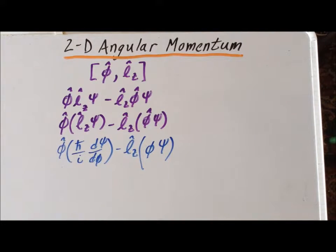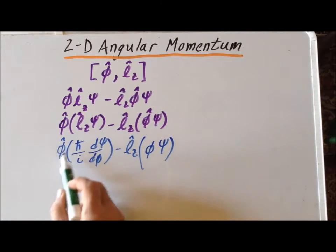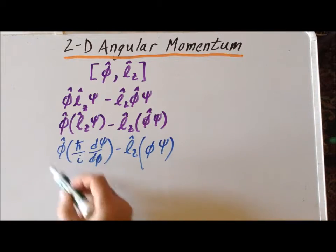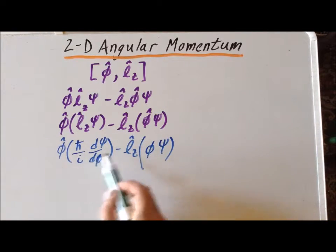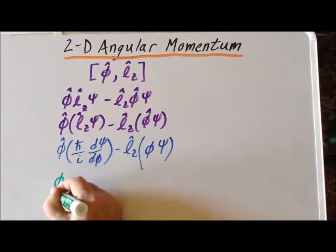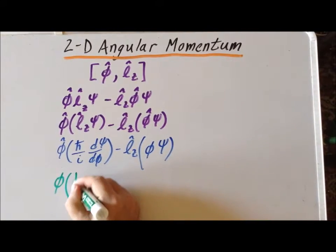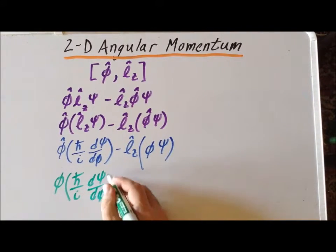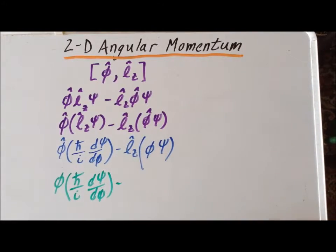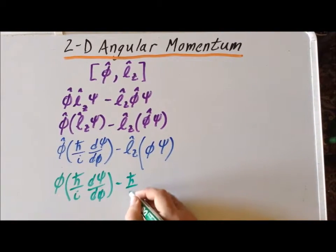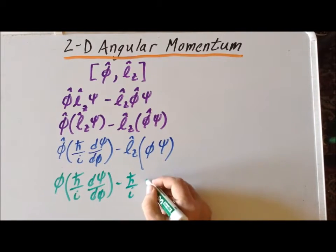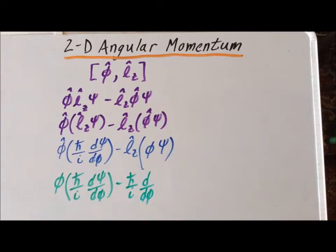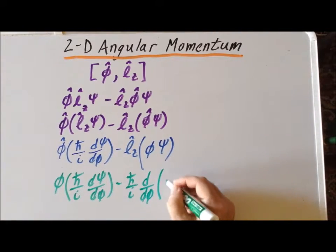Next, we have to operate with the second operator. For the angle phi, we simply multiply by the angle phi, giving us phi times h-bar over i times d-psi-d-phi. Then we replace the angular momentum operator by its actual form, which is h-bar over i times the derivative with respect to phi, and this is going to act upon phi times psi.